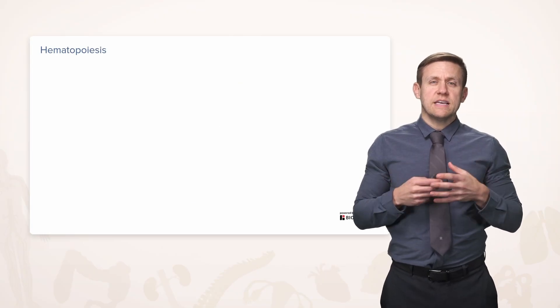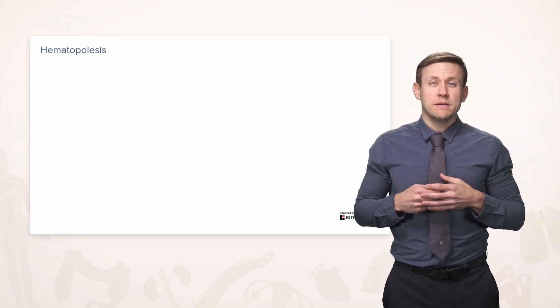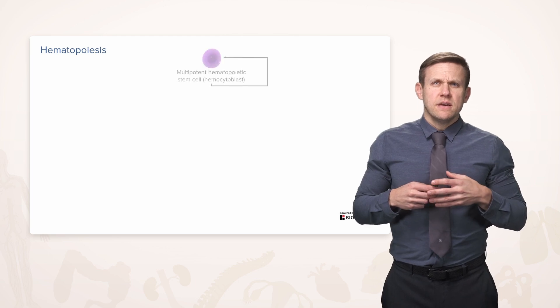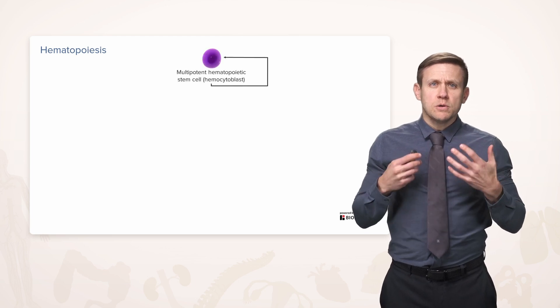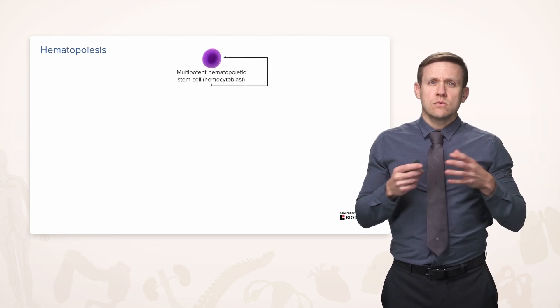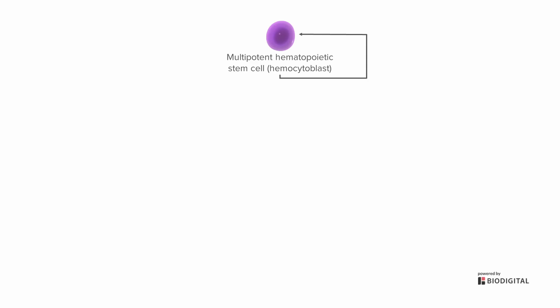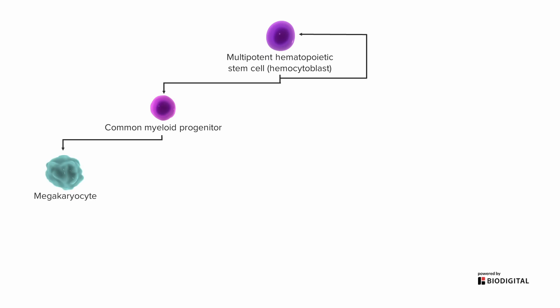Hematopoiesis itself is a pretty complicated topic, but basically it starts from a multipotent cell that can go down one of various lines. It can go down a myeloid progenitor line where it will eventually make megakaryocytes — mega means big — and it will branch off little pieces into platelets to help clot. We could also have erythrocytes or red blood cells.